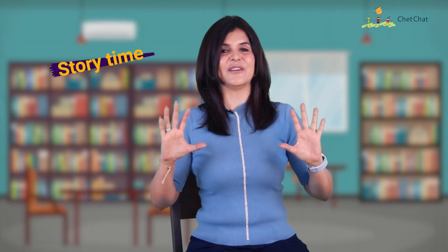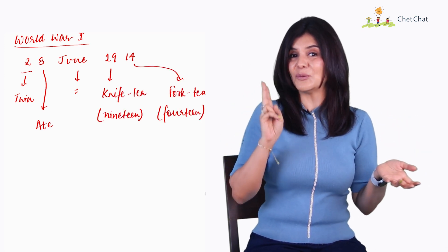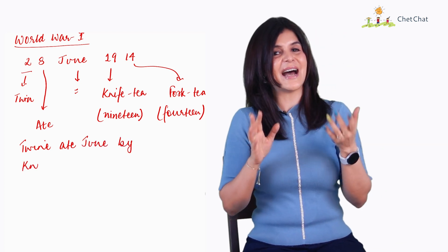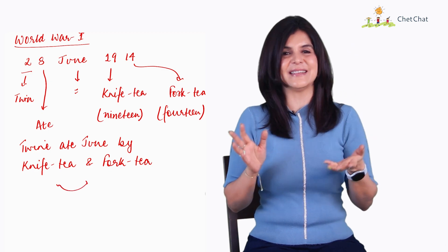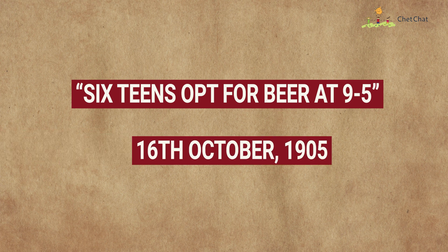The next technique is Story Time — for all the storytellers out there. If anyone asks when World War One started, tell them a story: 'World War One started when twin-eight June, by knife-T and fork-T.' That secret code means: twin-eight = 28th June, knife-T = 19, fork-T = 14 — so 28th June 1914. Another example: when was the Partition of Bengal? '16th, opt for beer, at nine to five' — 16th October 1905.